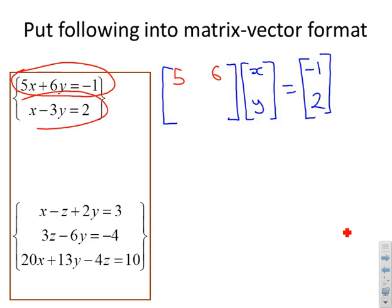How do I produce x minus 3y? I put a 1 here and a minus 3 here. Now you have a single matrix vector identity instead of two equations.